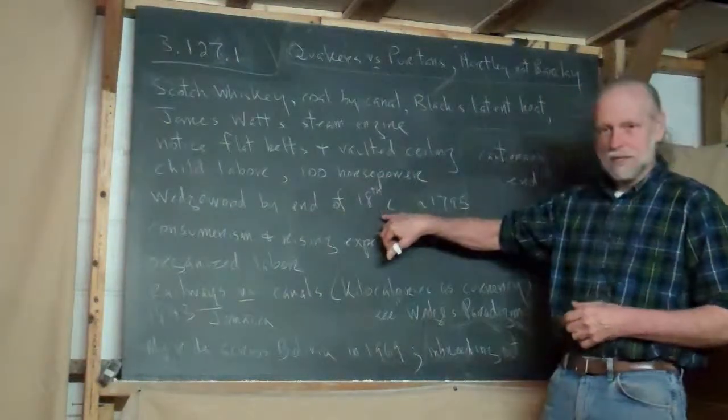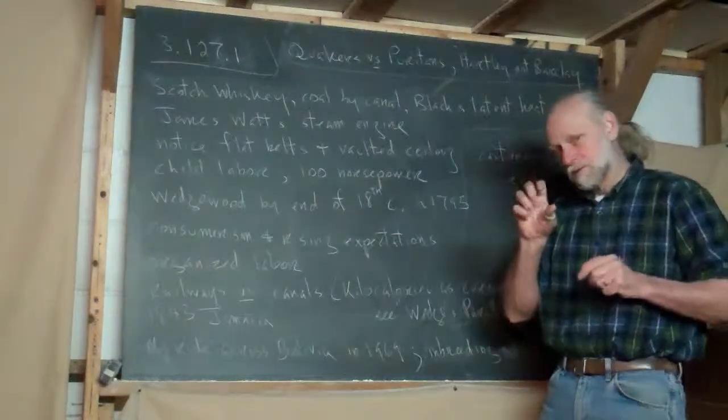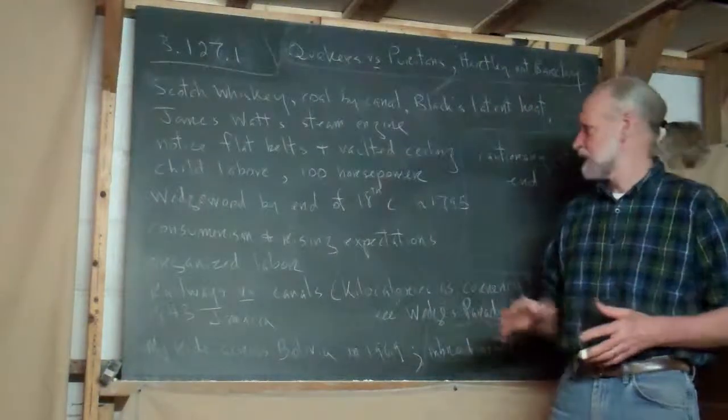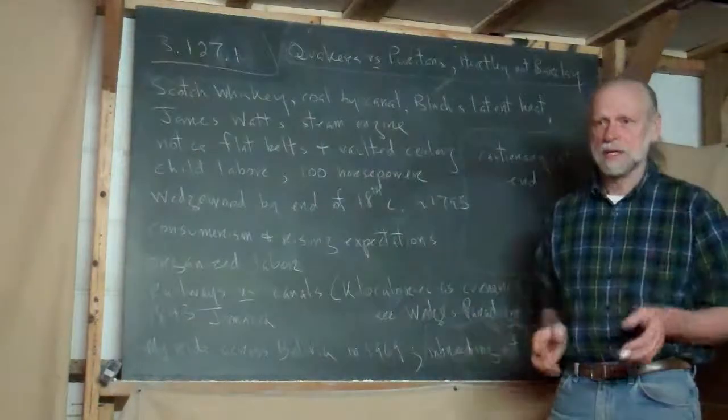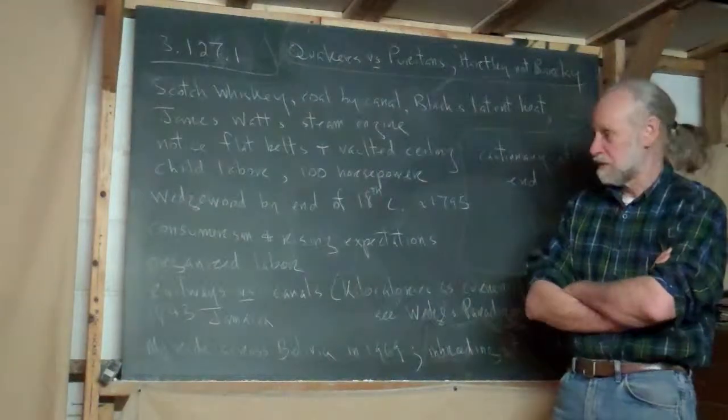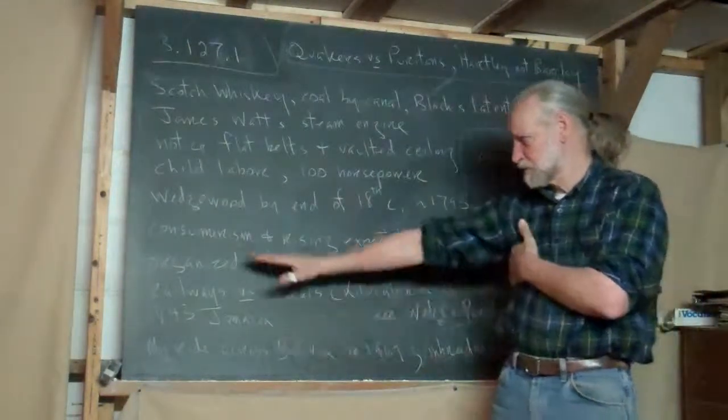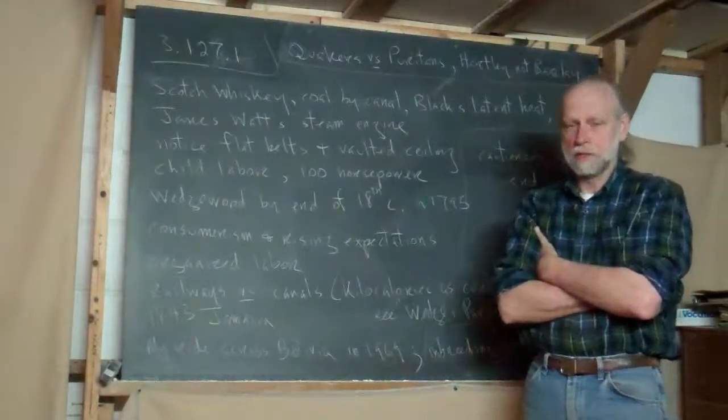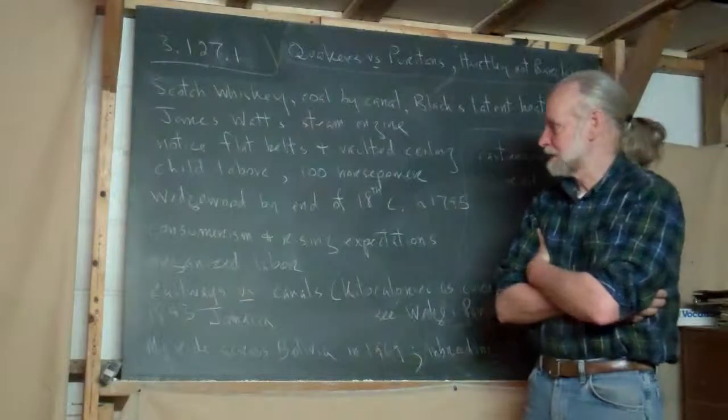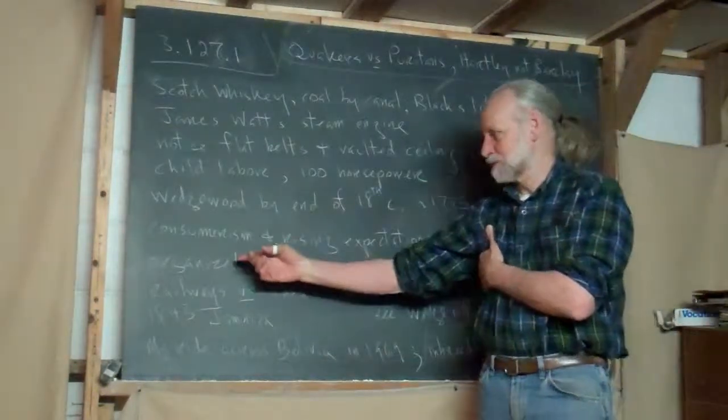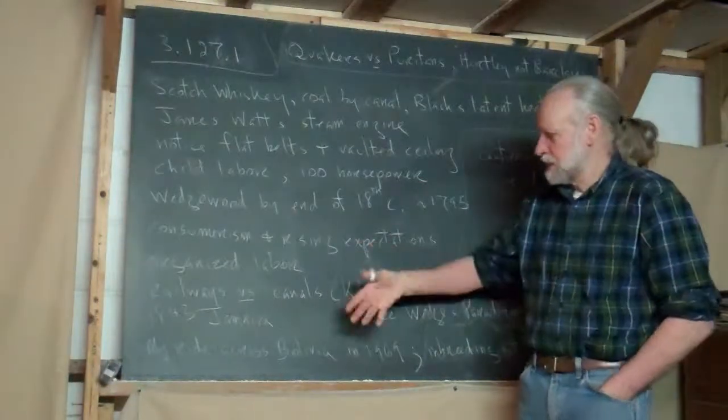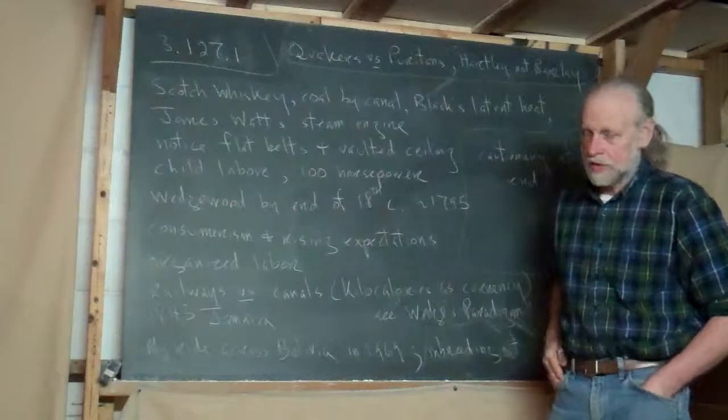Wedgewood, by the end of the 18th century. I wrote that down to try to peg it for you in time. That would be around 1795. I use 1750, in my mind, a figure for the start of the Industrial Revolution. Consumerism becomes a factor, and it is huge. I will be discussing it in the Decentralist Manifesto. Rising Expectations, Organized Labor. He deals with it.